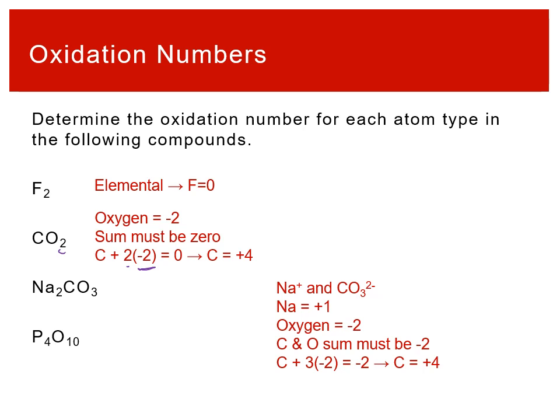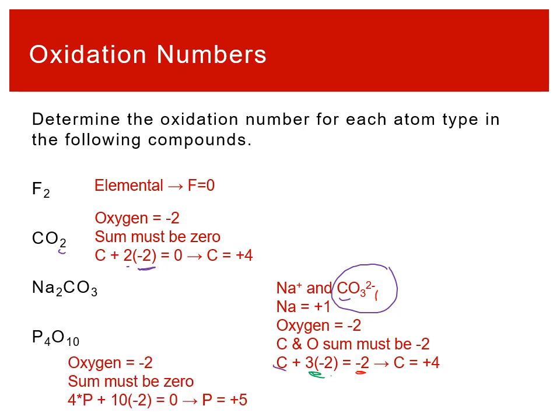The carbonate ion CO₃²⁻ has a charge of −2, so the sum of carbon and oxygen oxidation numbers must equal −2. With three oxygens at −2 each, that's −6, so carbon must be +4: −6 + 4 = −2. Carbon is +4 in all carbonate ions regardless of the cation. For P₄O₁₀, oxygen is −2, and solving 4P + 10(−2) = 0 gives phosphorus an oxidation number of +5.